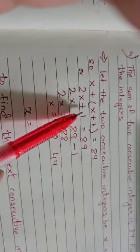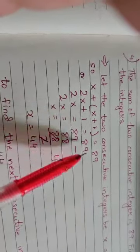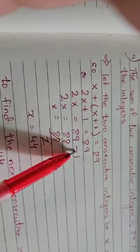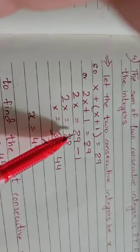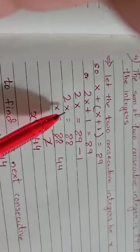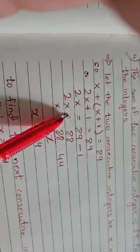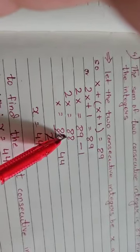hand side. When you take one number to the other side, the sign also changes, so the plus becomes minus here. 2x equals 89 minus 1, so 2x equals 88.